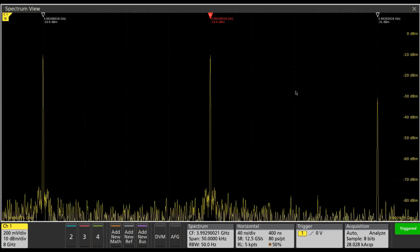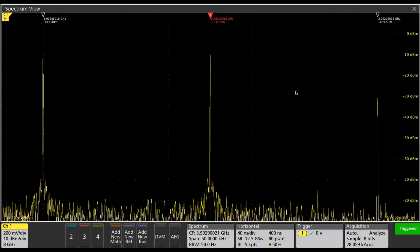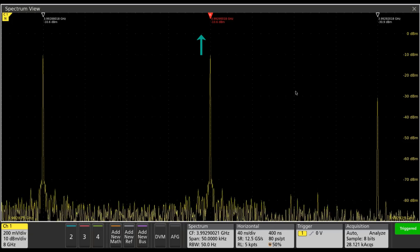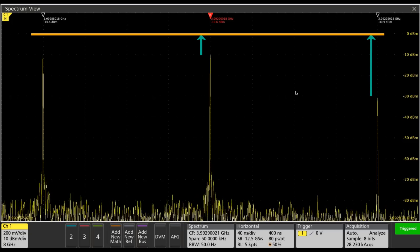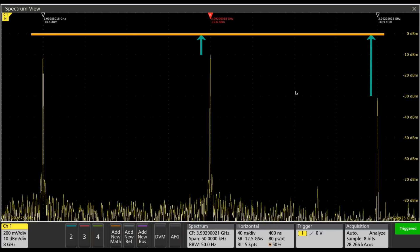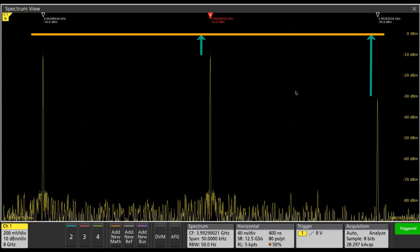You can imagine as the input signals increase, the third-order intermodulation distortion products eventually catch up with and be at the same magnitude as the input tones. At that point, that's what we call the third-order intercept point.